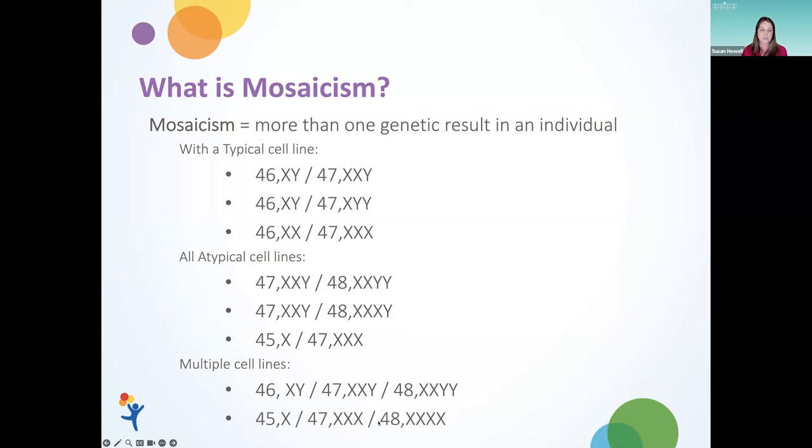We can see two, three, four — lots of different cell types when we're talking about mosaicism.